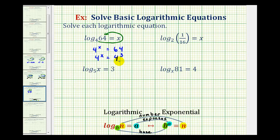So if these are equal to each other and the bases are the same, the exponents must equal each other as well. So our solution is x equals 3.